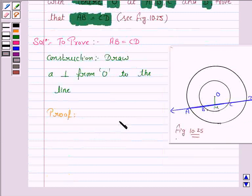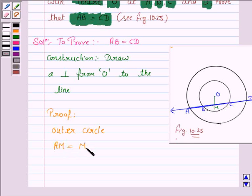Now we have two circles with same center, that is the concentric circles. For the outer circle, we see that AM is equal to MD. This is because perpendicular from the center to the chord bisects the chord.